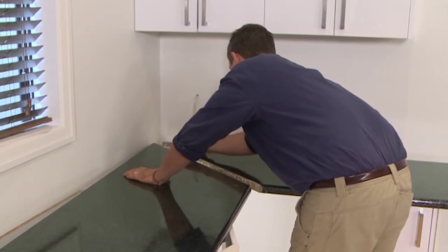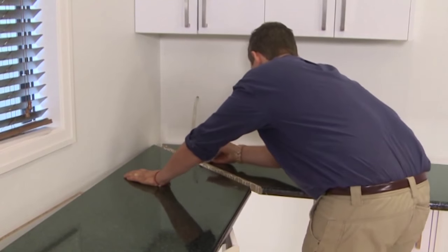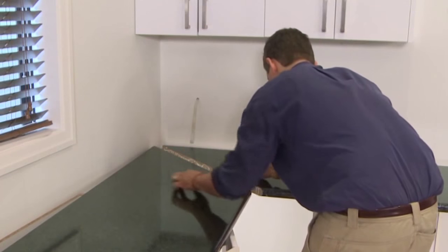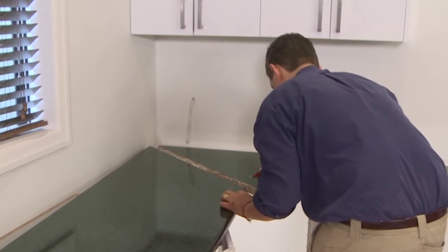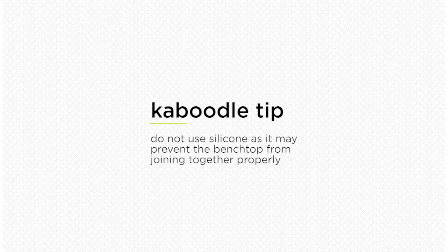With the benchtops in position, liberally apply exterior woodworking glue to both faces of the join so both sides are completely covered. Do not use silicon as it's thicker than glue and can stop the benchtops from joining together properly.